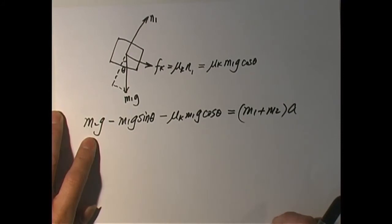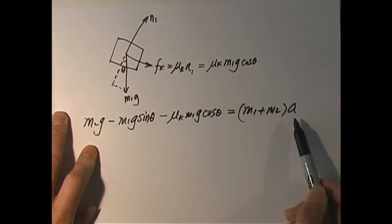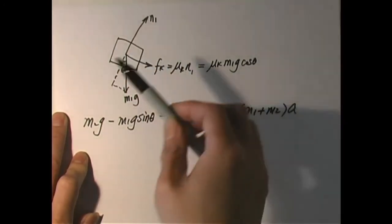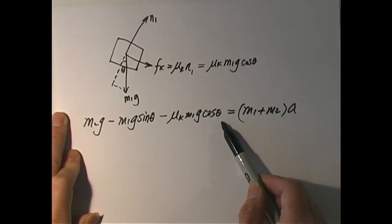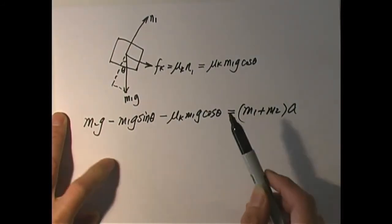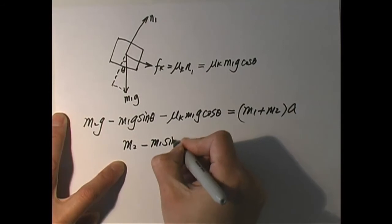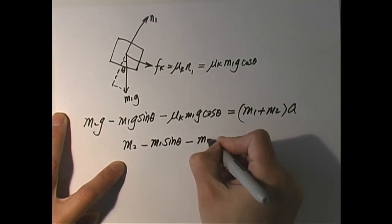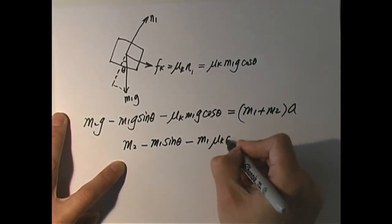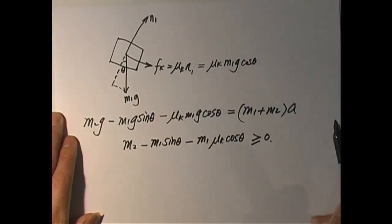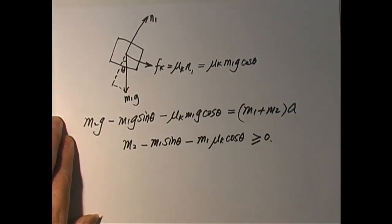We have to be self-consistent: when we solve A, we check whether it is positive or negative. It has to be positive, because we assumed the object goes upward and so friction is downward. The condition is that M2 minus M1 sine theta minus M1 mu_k cosine theta must be greater than or equal to zero. This is the minimum value of M2 that can make this scenario happen.